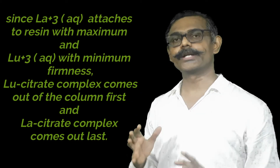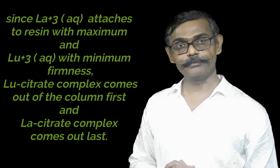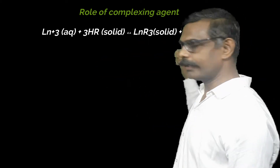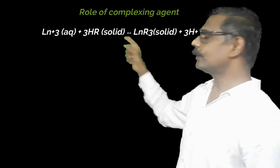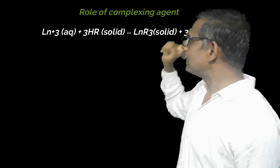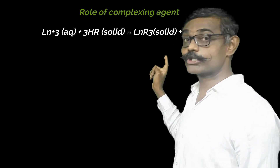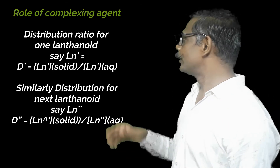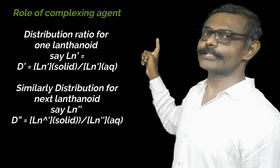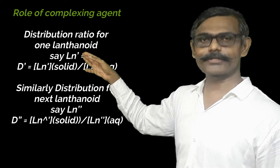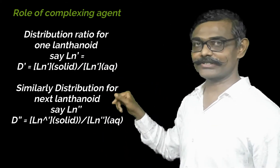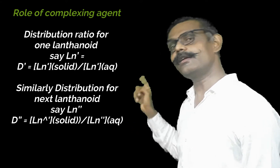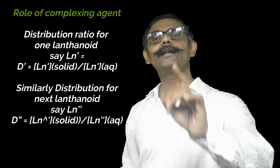To understand mathematically how complex formation enables separation: consider the equilibrium Ln³⁺ + 3HR ⇌ LnR₃ + 3H⁺. For this equilibrium there is a distribution constant. Lanthanides are distributed in two parts — the solid resin part and the aqueous solution part. The distribution ratio d is: d = [Ln] in solid form / [Ln] in aqueous form.